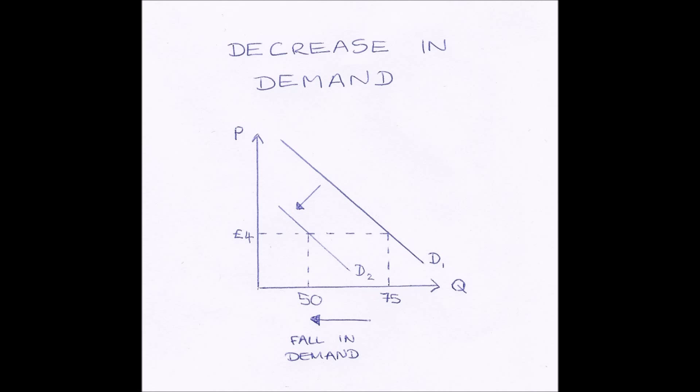And population structure. So for example, if there are lots of old people in the population, then it's likely there will be a high demand for goods that old people particularly buy. There will be an increase in that demand.